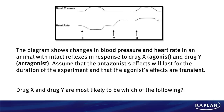Critical thinking — keep that in mind. Drug X is an agonist and drug Y is an antagonist. Assume that the antagonist effects will last for the duration of the experiment and that the agonist effects are transient. The question reads: drug X and drug Y are most likely to be which of the following. This is a common question — you're going to see this pattern appear a lot. It's basically an experimental setup asking you to identify drugs based upon their effects on heart rate and blood pressure.